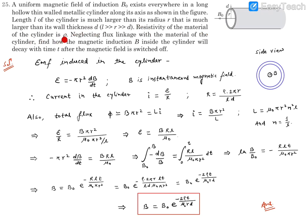Neglecting flux linkage with the material of the cylinder, find how the magnetic induction B inside the cylinder will decay with time after the magnetic field is switched off. So this was a long cylinder with a magnetic field existing, then the field has been switched off. It drops from B₀ to zero, and we need to find how this decays with respect to time.